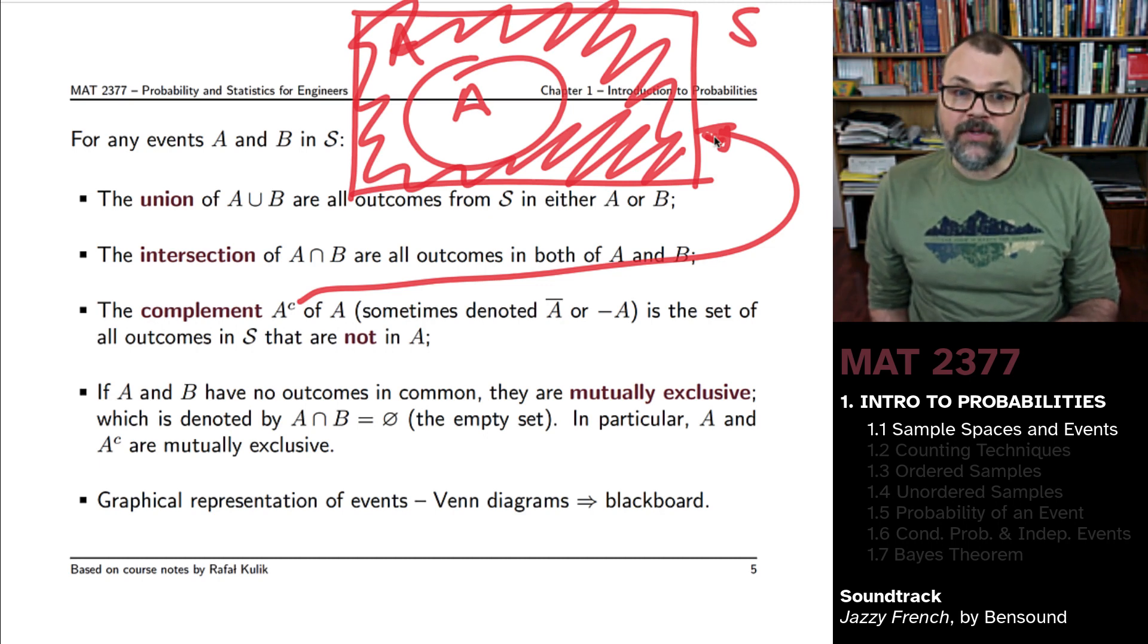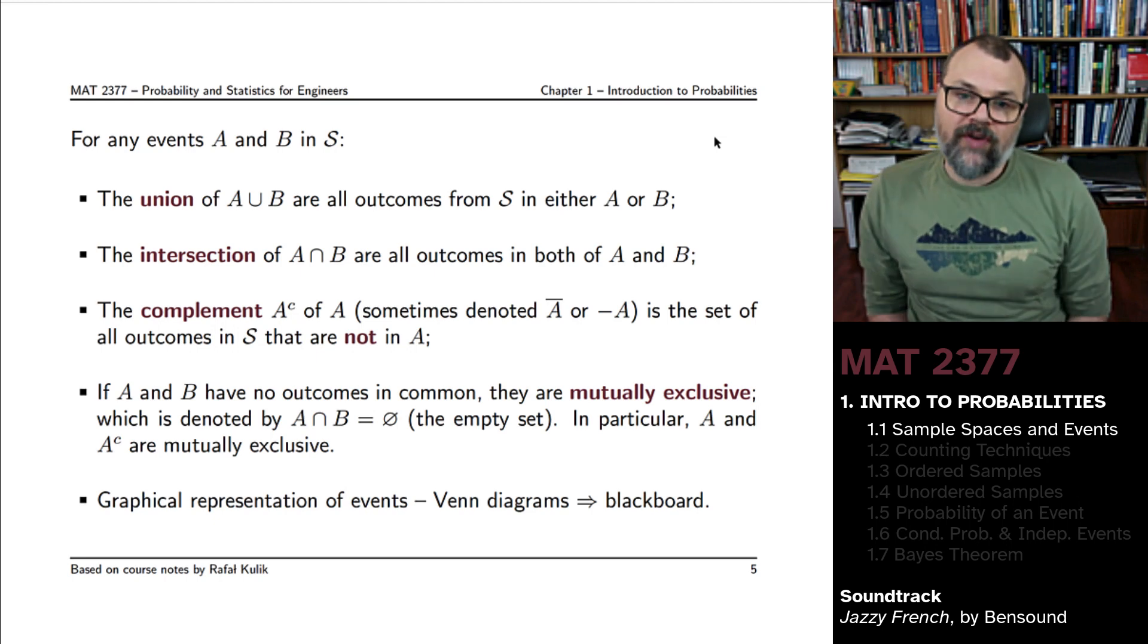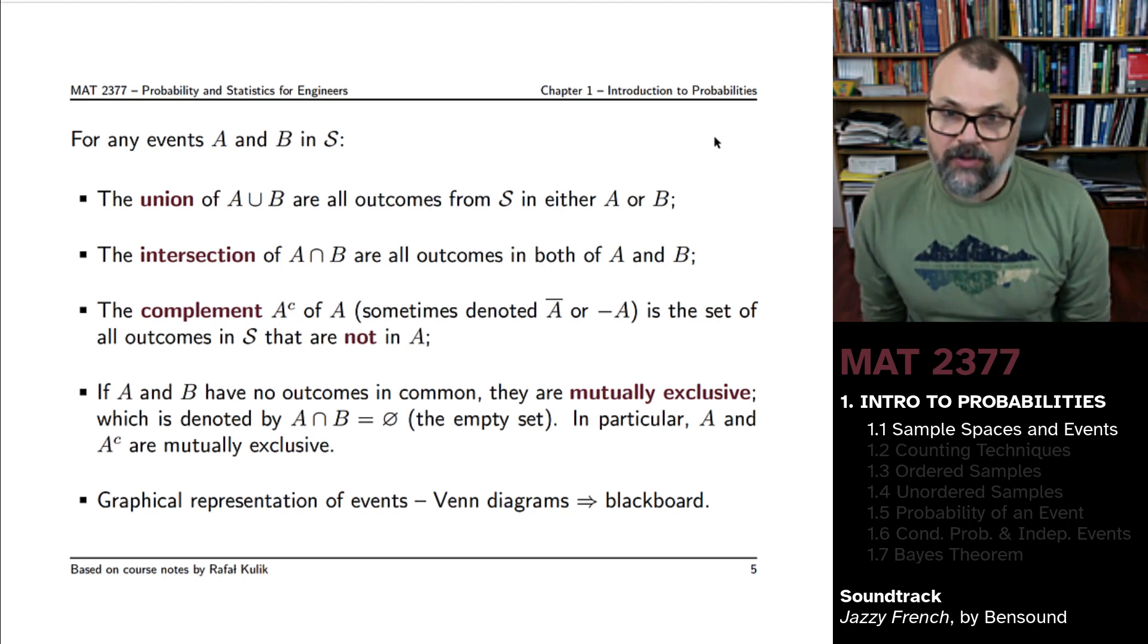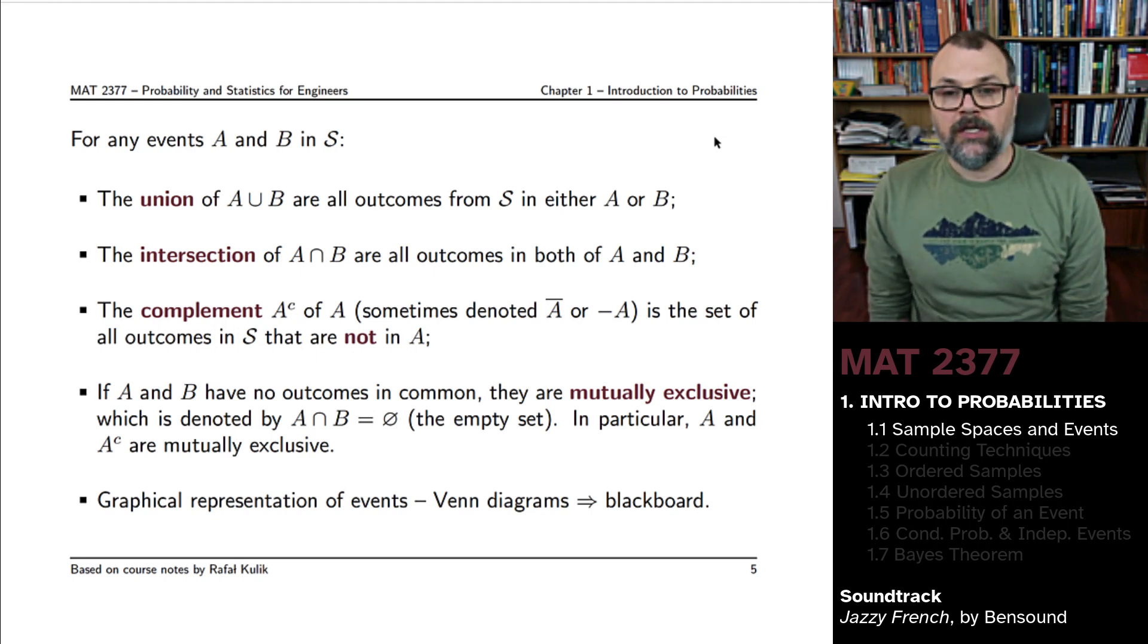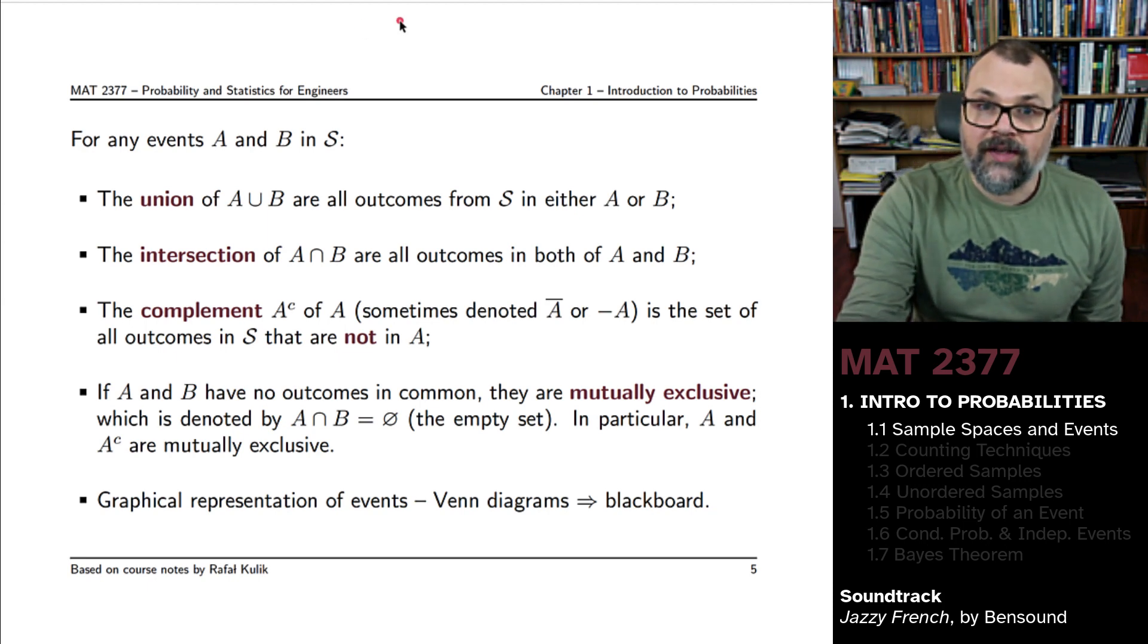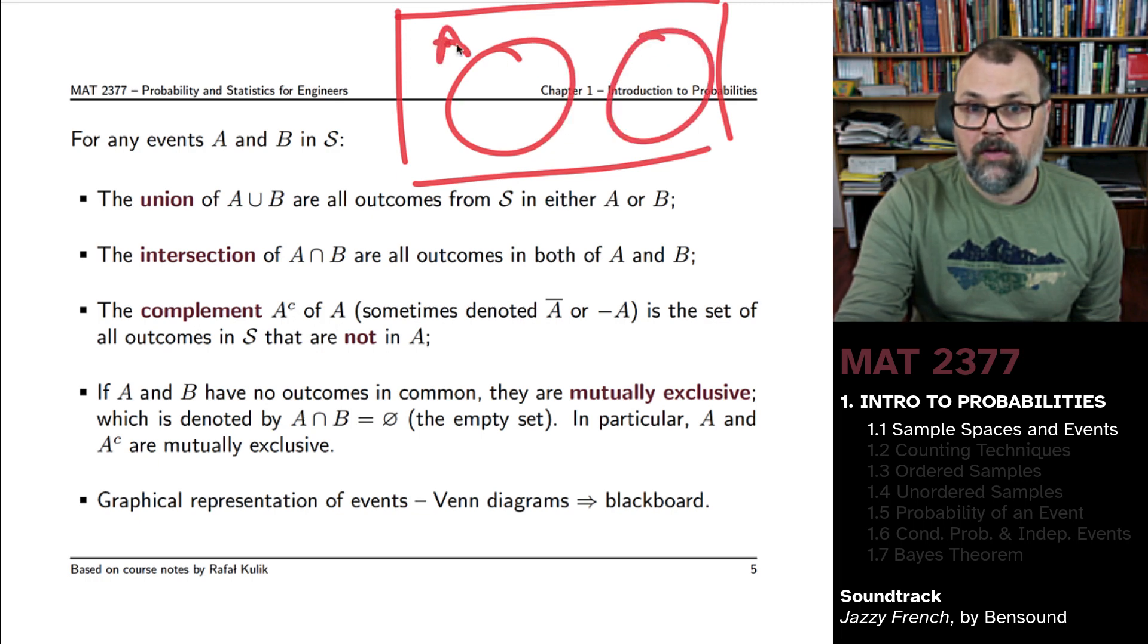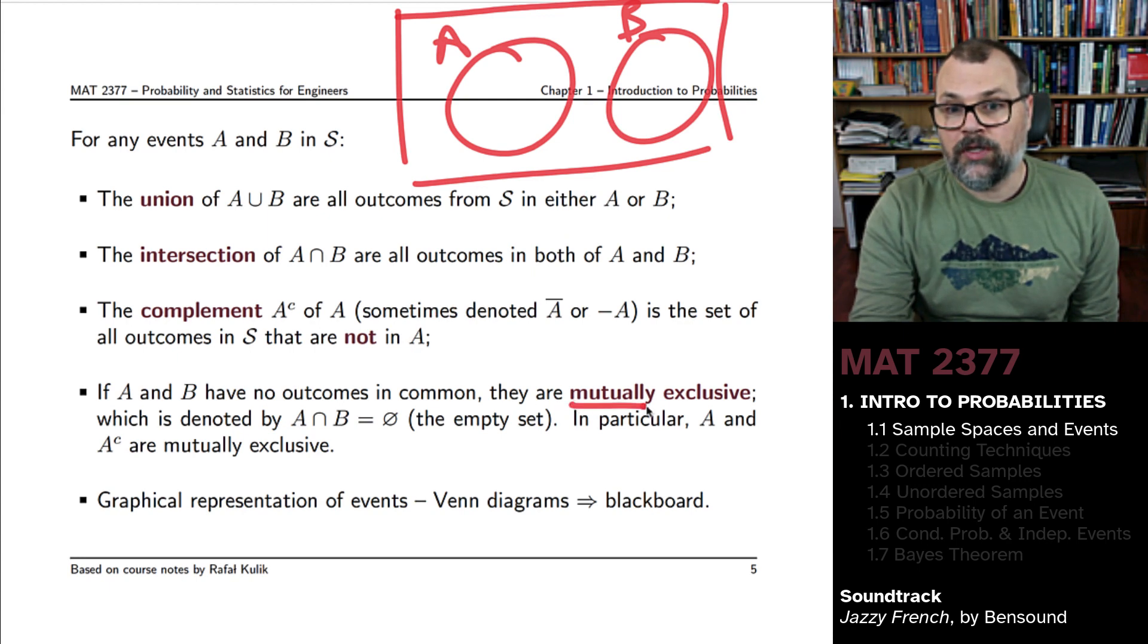If it turns out that two events have no outcomes in common, if they are mutually exclusive, what this is saying is that the intersection is empty. So if two events have no intersection here, we say that they're mutually exclusive.